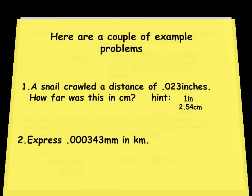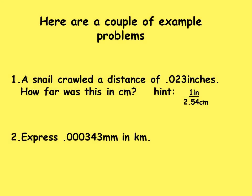Now let's look at a couple of problems. A snail crawled a distance of 0.023 inches — how far is this in centimeters? We have a given value and unit: 0.023 inches. We're going to change that to the desired unit, which is centimeters. The conversion factor we're going to use is a true fraction showing the correct relationship between inches and centimeters: 1 inch equals 2.54 centimeters.